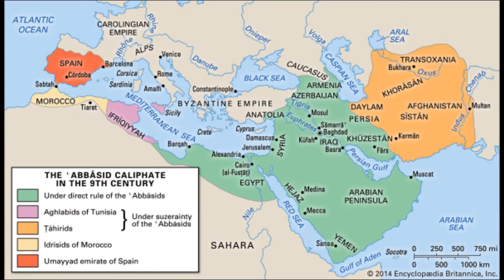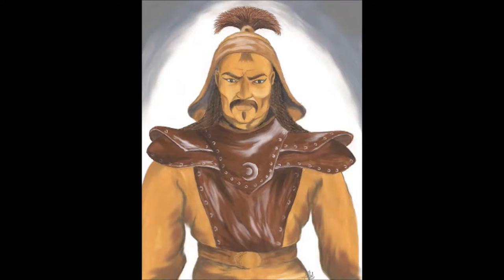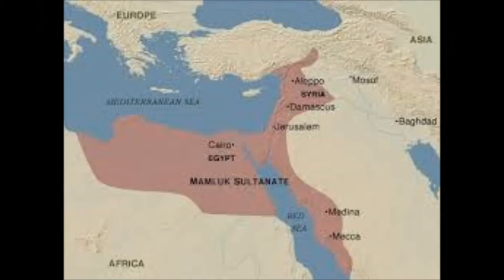There were many Mamluks during the time of the Abbasids in Iraq. However, following the invasion of the Mongols under the leadership of Hulagu Khan, they burnt down the city, so many of the Mamluks escaped to Egypt and formed the empire there, with their capital in Cairo.